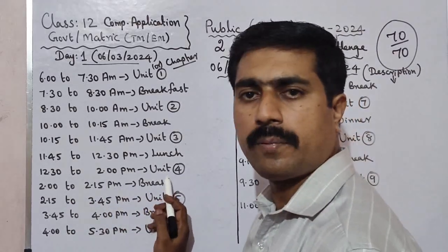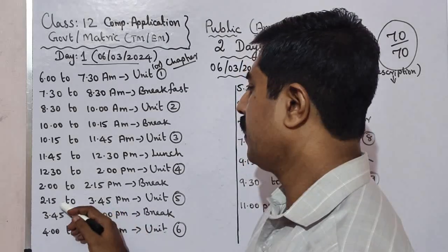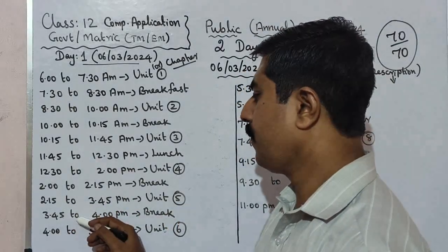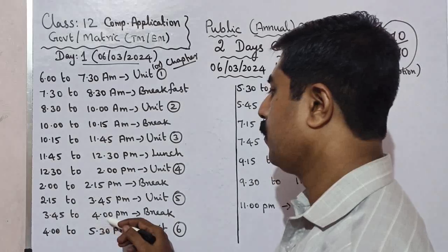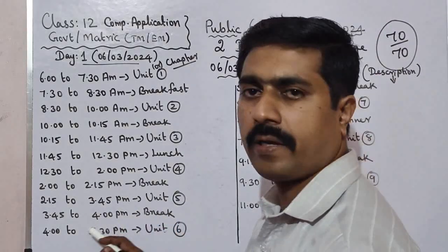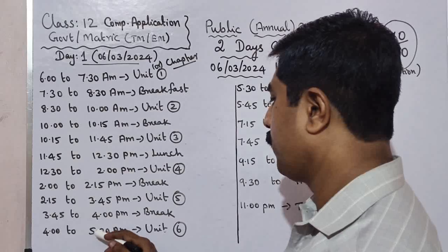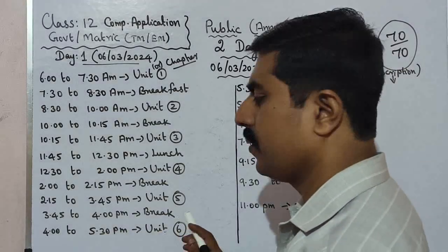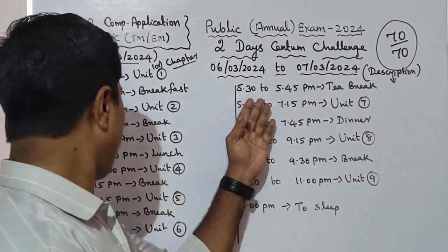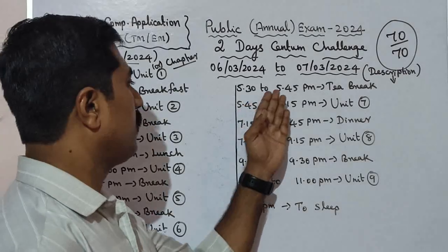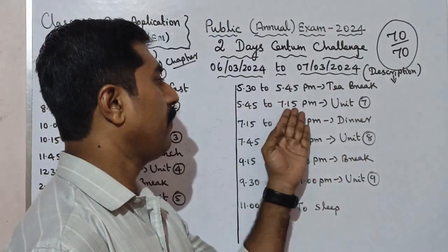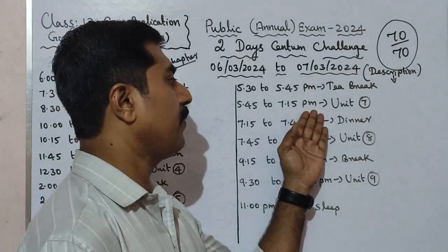Then a 15-minute break, followed by 2:15 to 3:45 PM for Unit 5. From 3:45 to 4:00 PM is a 15-minute break. Then 4:00 to 5:30 PM, one and a half hours, for Unit 6. Next, 5:30 to 5:45 PM is a 15-minute tea break.